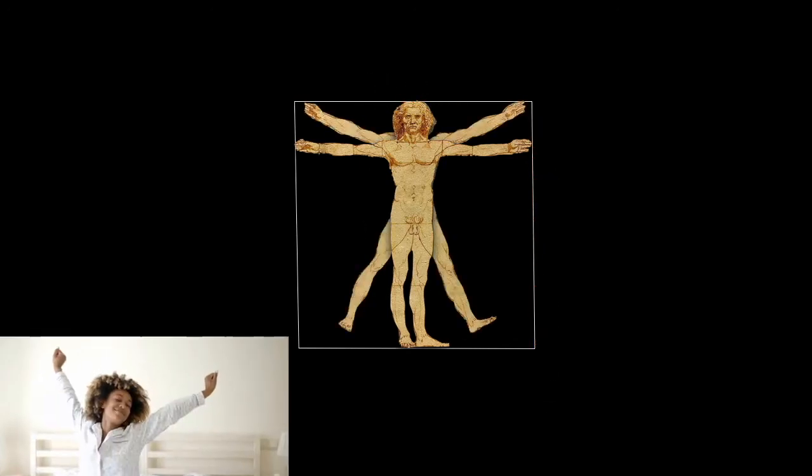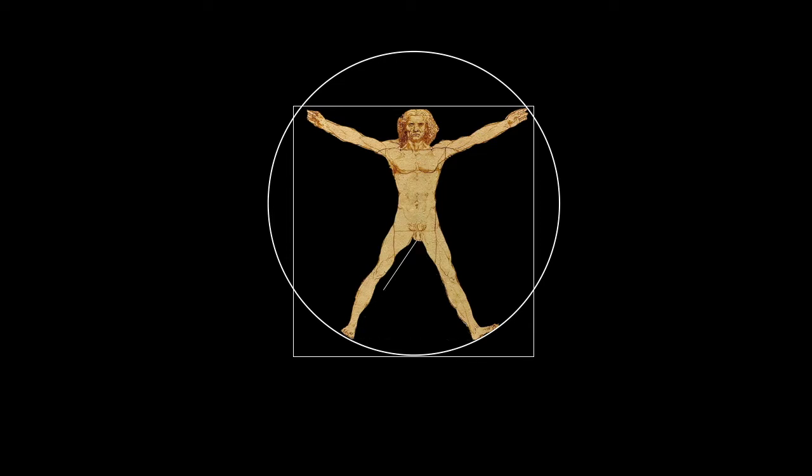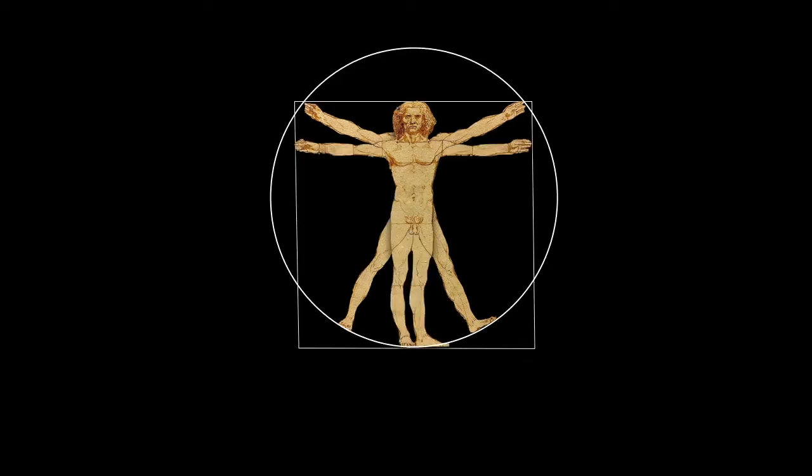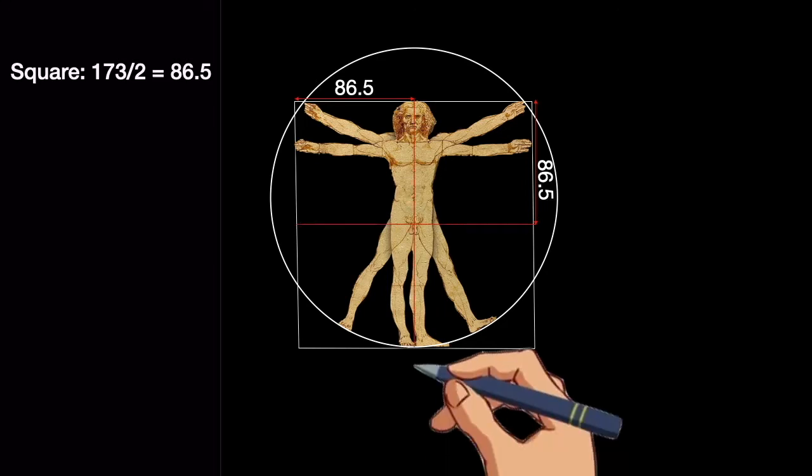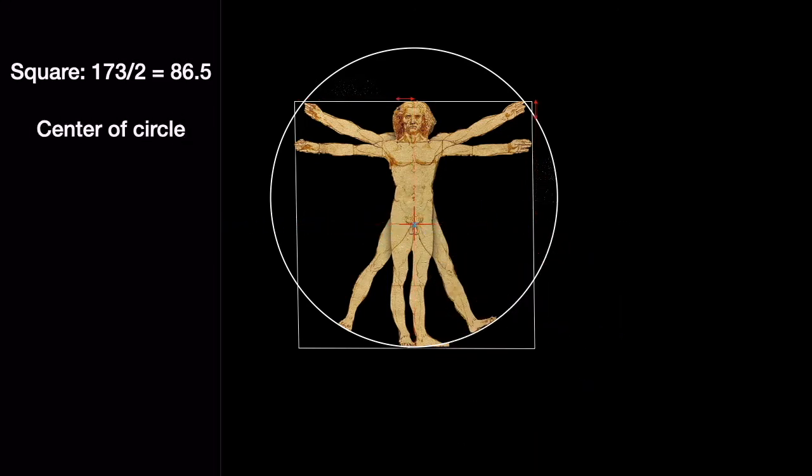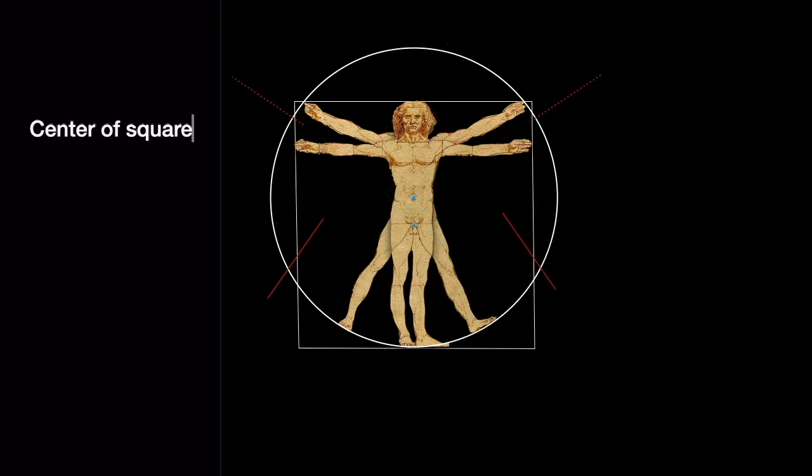Then if a person opens both arms and legs enough, a circle around him can be drawn. In this case the space between the legs is filled by a triangle. Now let's find the center of the circle in the square. Now let's draw two lines from the center of the circle and the square to the sides.